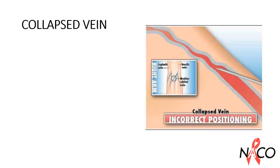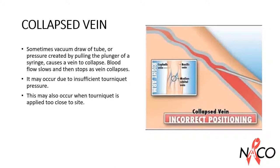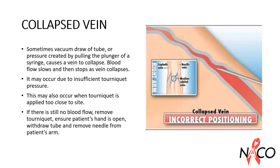Sometimes the vacuum draw-off tube or pressure created by pulling the plunger of a syringe causes a vein to collapse. Blood flow slows and then stops as the vein collapses. Collapse early on may be due to insufficient tourniquet pressure; after about 5 ml this may be due to excessive tourniquet pressure. This may also occur when the tourniquet is applied too close to the site. Experiment with tourniquet pressure — increase or decrease as appropriate. If still no blood flow, remove the tourniquet, ensure the patient's hand is open, withdraw the tube, and withdraw the needle.